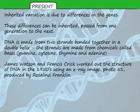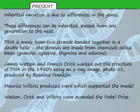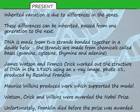This structure was eventually worked out by two scientists, James Watson and Francis Crick, in 1950. They used an X-ray image of the structure of DNA called Photo 51, produced by Rosalind Franklin. Another scientist, Maurice Wilkins, also produced work which helped support the model that Watson and Crick came up with. For their work, Watson, Crick, and Wilkins were all awarded the Nobel Prize for Science. Unfortunately, Rosalind Franklin died before the prize was awarded.